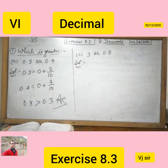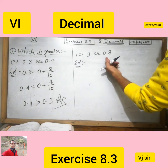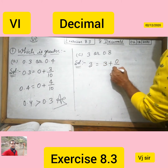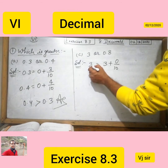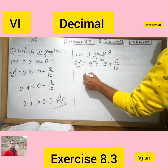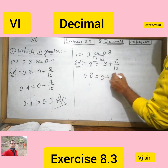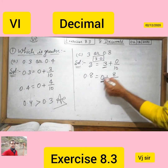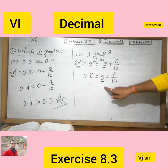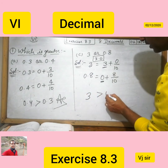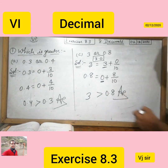Now we move to the next question: is 3 greater or 0.8? We can represent 3 as 3 plus 0 upon 10, meaning 3.0. And 0.8 is 0 plus 8 upon 10. Now you see the whole number part: here it is 3 and here it is 0. So 3 is greater than 0.8.